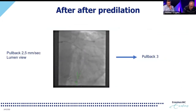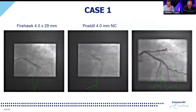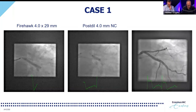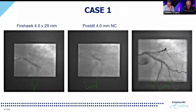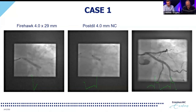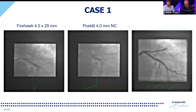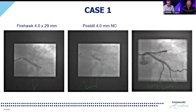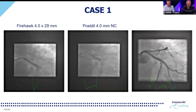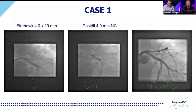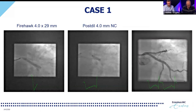The procedure ended with a very nice geographic result, TIMI 3 flow, and ST-segment resolution on the ECG. Now comes the key benefit of IVUS: optimizing stent implantation by assessing expansion, apposition, edge dissections, and plaque burden at the edges. We proceeded with the final post-PCI pullback.